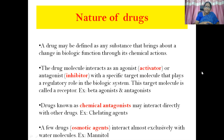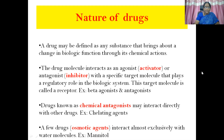This target molecule is called a receptor. For example, we will take beta agonist and antagonist. When a particular drug molecule combines with the receptor and produces agonistic or activating action, that receptor-mediated activation is known as an agonist. Whereas beta blockers, when combined with particular receptors, inhibit the activity of the agonist — so they are called antagonists. Drugs known as chemical antagonists may interact directly with other drugs, like antidotes, which combine with a lead molecule and nullify its toxic effects — that is chemical antagonistic action.